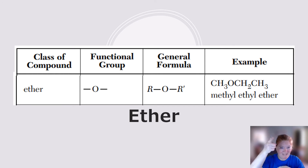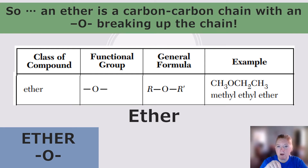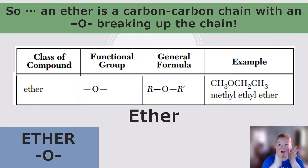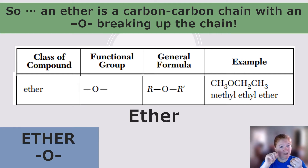Next up: ether. Ether's functional group is line-O-line, meaning the oxygen atom is breaking up the carbon chain. So ether is a carbon chain with an oxygen atom in the middle — carbon-oxygen-carbon. Because of this, we name each chain separately. For example, 'methyl ethyl ether' means one carbon on one side of the oxygen and two carbons on the other side.